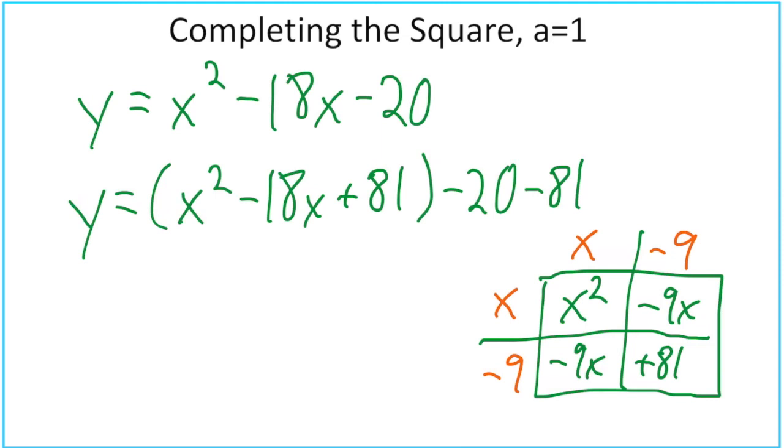And now we're ready to just simplify to our vertex form. We end up with x minus 9 squared. And then we have negative 20 and negative 81, negative 101.